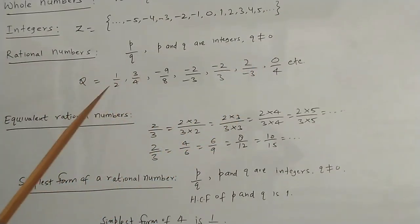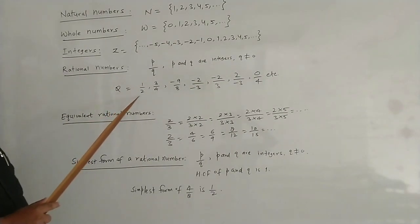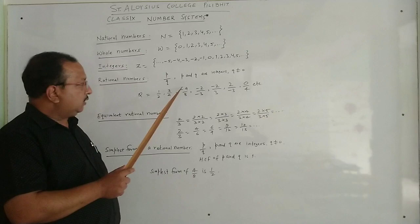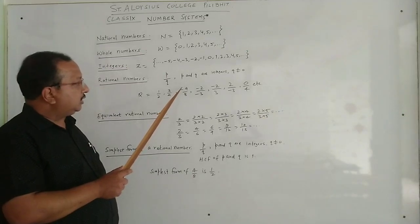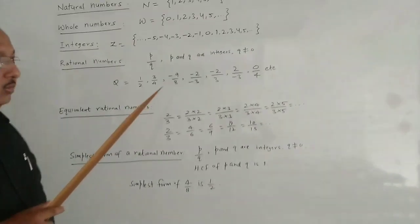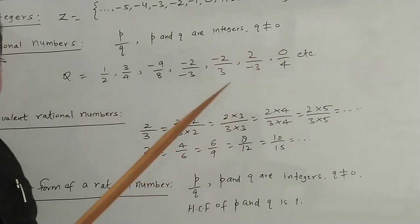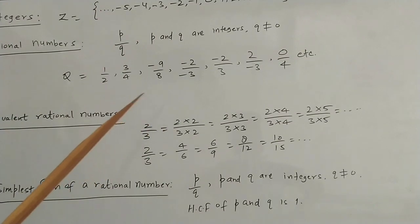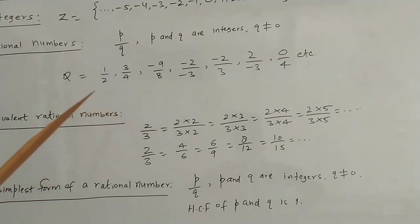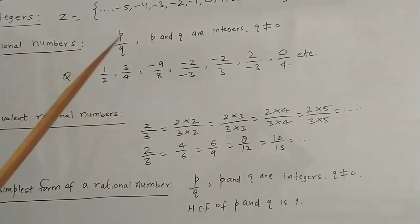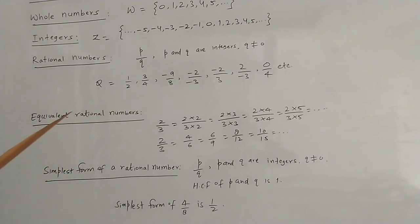Here you can see that both the numerator and denominator can be positive. It may be that the numerator is negative and denominator is positive, or both are negative, or the numerator can be 0. But the denominator of a rational number can never be 0. The set of rational numbers is denoted by the capital letter Q.